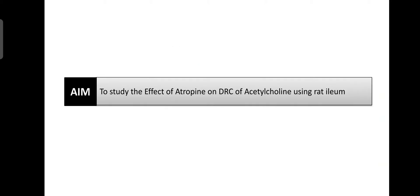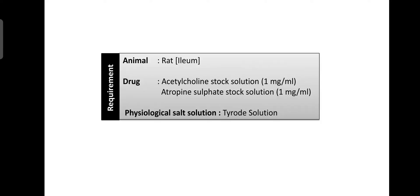The aim of this practical is to study the effect of atropine on the DRC of acetylcholine using rat ileum. Requirements: animal — rat ileum; drugs — acetylcholine stock solution 1 mg/ml, atropine sulphate stock solution 1 mg/ml, and physiological salt solution 2 mg/ml as a Tyrode's solution.